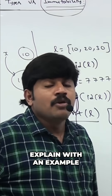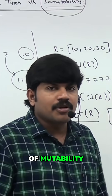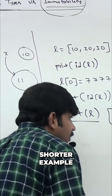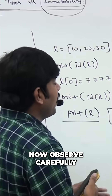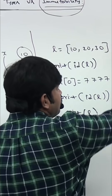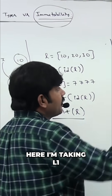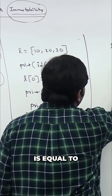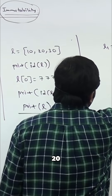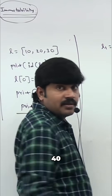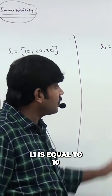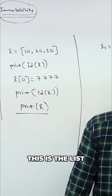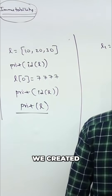Can you please explain with an example what the meaning of mutability is? Let me go for one small short example. Here I'm taking l1 is equal to 10, 20, 30, 40. This is the list we created.